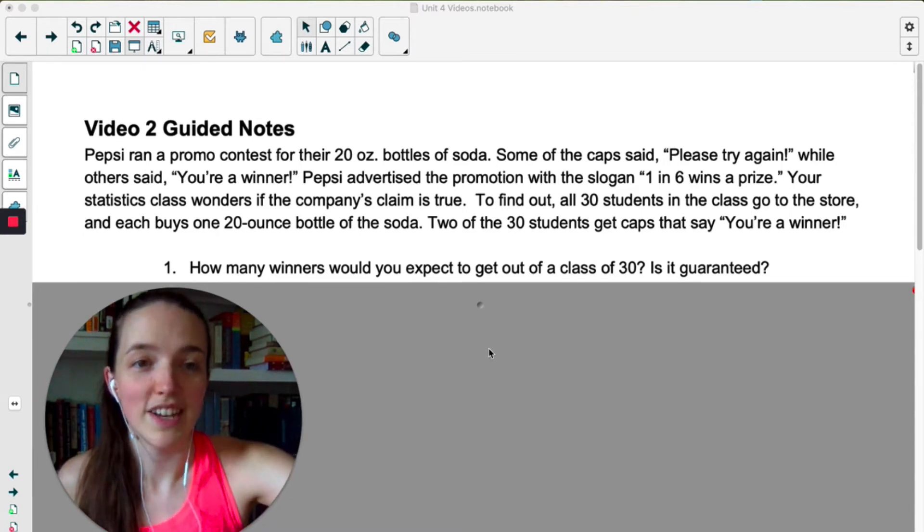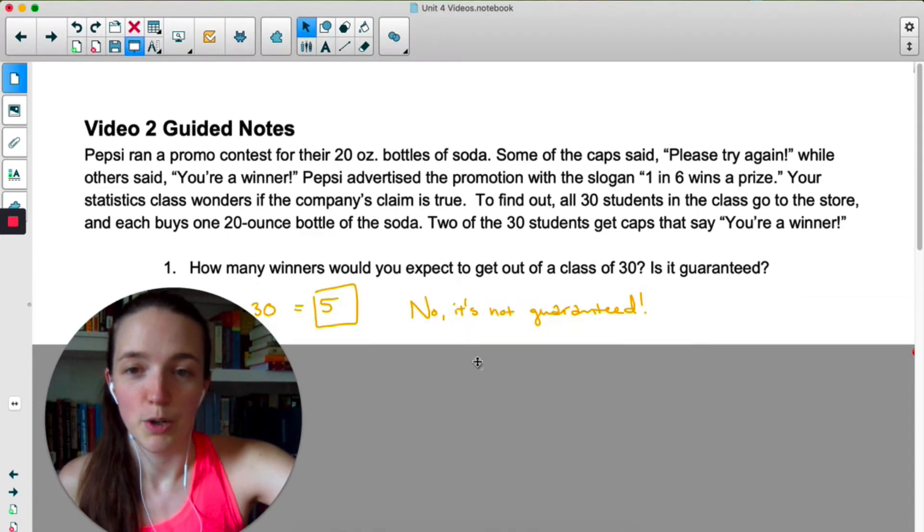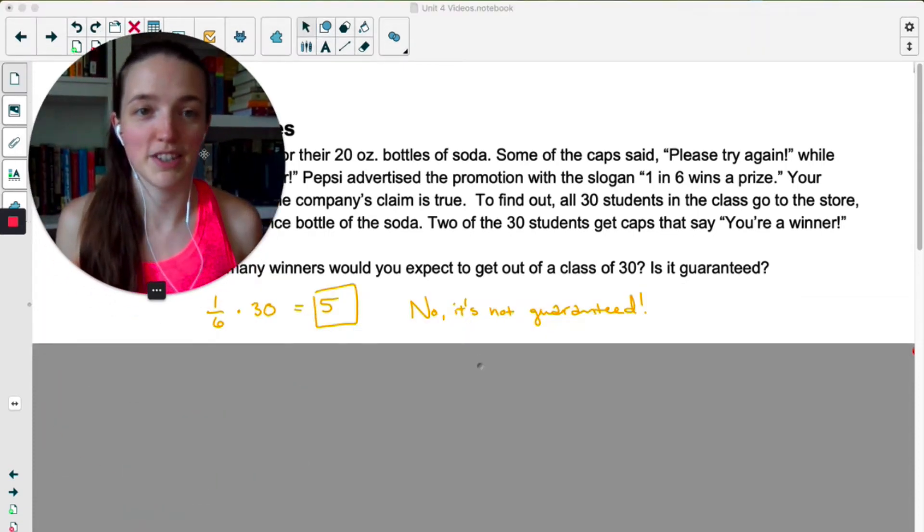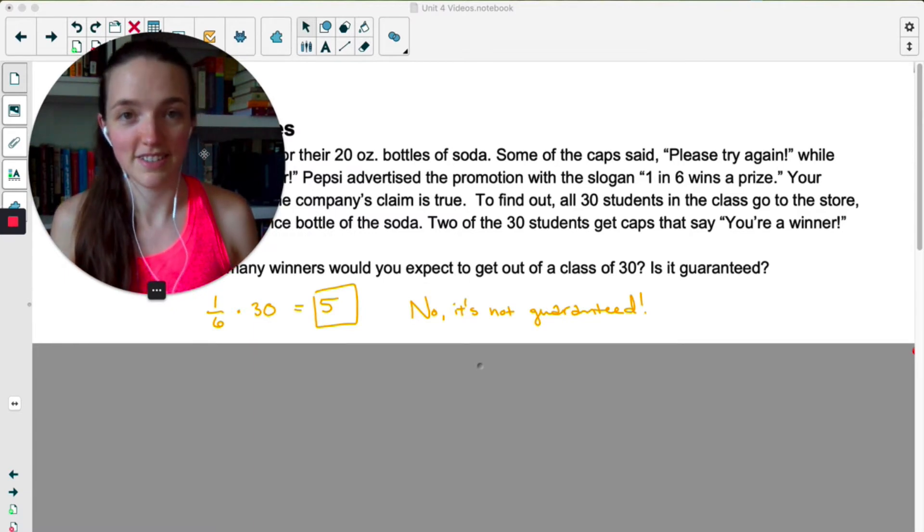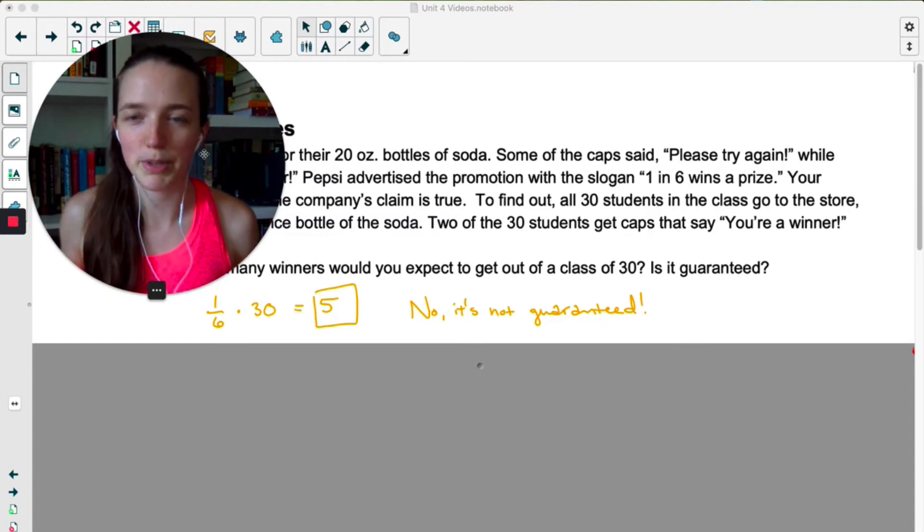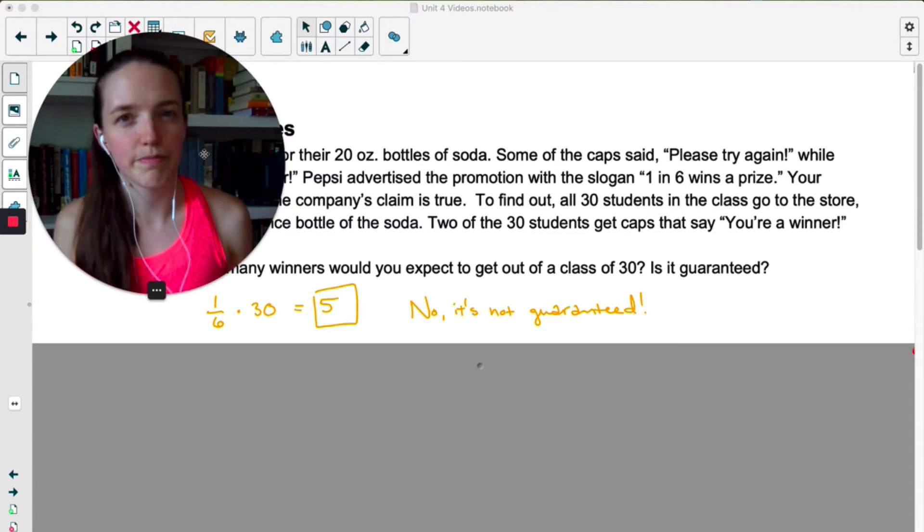If their slogan is that one in six wins a prize, we would expect there would be five winners in a class of 30 because one sixth of 30 is five. Now that's not guaranteed, we would expect about five winners in the class. Now we only saw two winners in our class, and our question that we want to answer is, is Pepsi telling the truth? Is it really a one in six chance or is it really smaller than that?